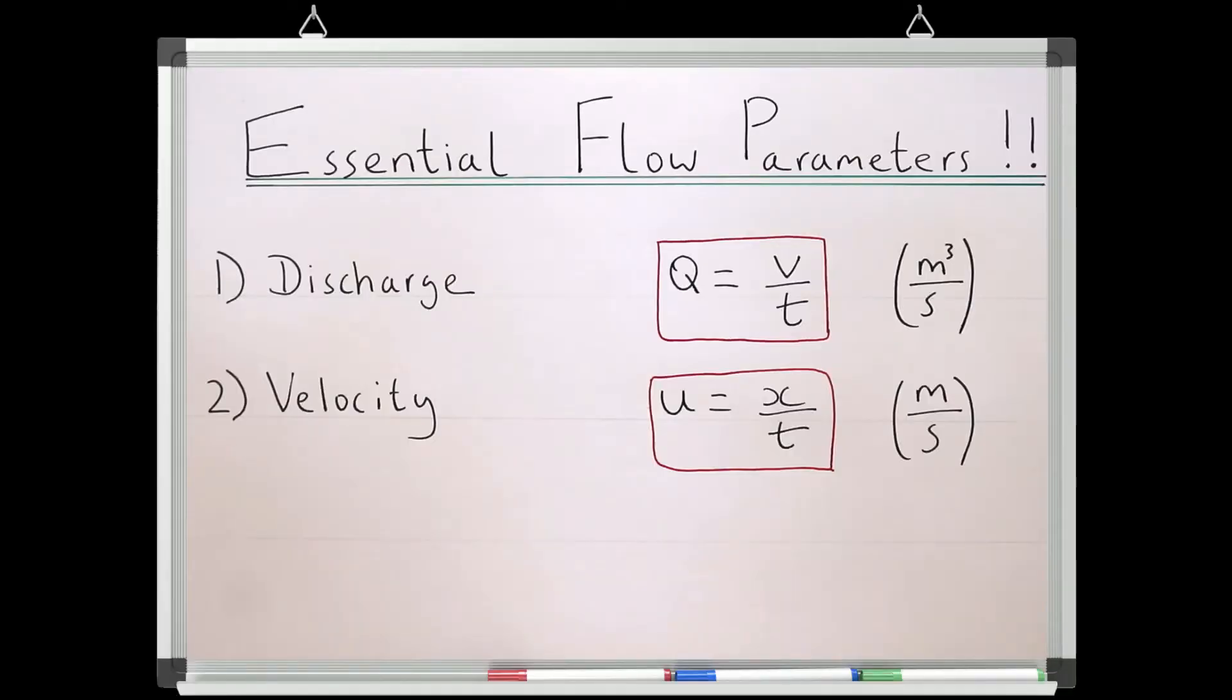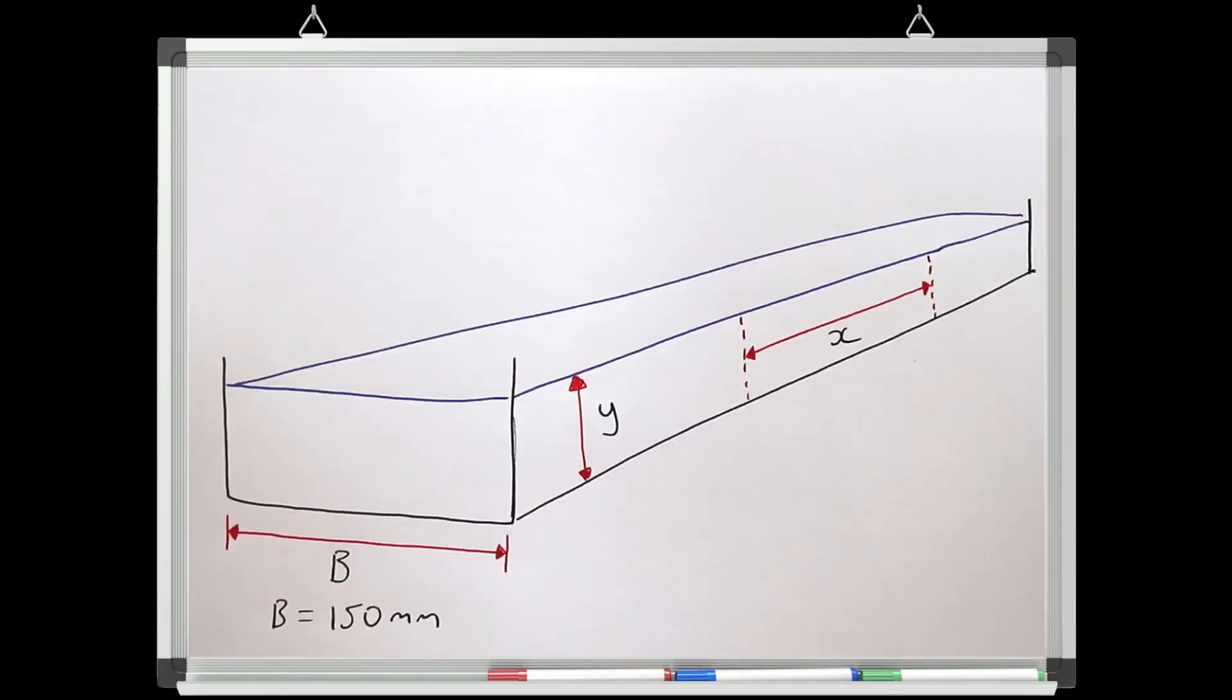The final parameter to consider is the flow's cross sectional area. This is the area taken up by the flow's cross section. Exactly how we define this term depends on the geometry of the flow, but for a simple rectangular flow like my flume, it would be the width of the channel times by the flow depth.